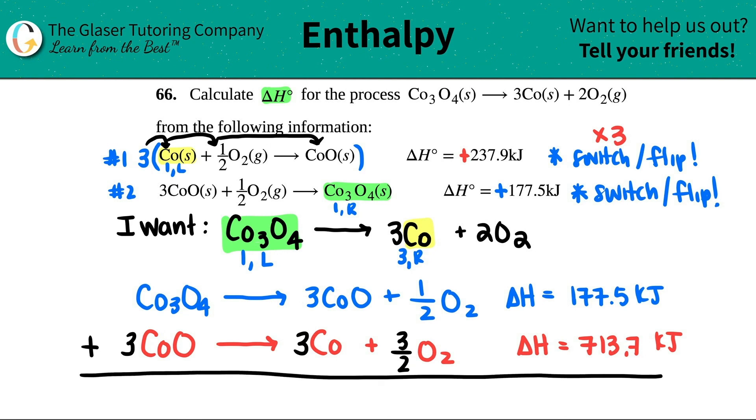So now I'm going to add this up. And when I do that, I will cancel like things out that are on opposite sides. So look here, guys, you see how I have three CoOs on the top right side and I have three CoOs on the bottom left. They're on opposite sides and it's the same number. They're both three. So goodbye. They get canceled. Anything else that can get canceled? No, because they're not on opposite sides.